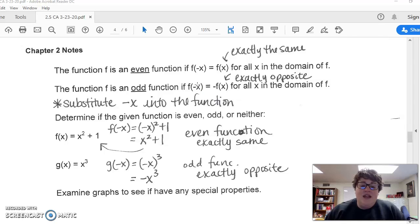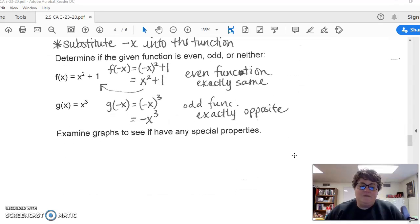To find symmetry, you plug in negative x—substitute negative x into the function. If it comes out exactly the same, you have an even function. If it comes out exactly opposite, you have an odd function. I did a couple examples there. If some signs are the same and some are different, then you have neither—no symmetry.